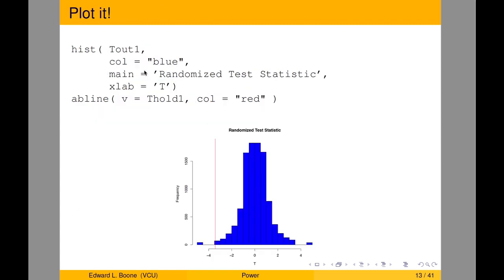When I run this, I plot t_out1 as a histogram with color blue, title 'Randomized Test Statistic', and x-label 't'. I add a vertical abline at t_hold1 — my original observed value — in red. Your picture won't look exactly like mine because I didn't set a seed intentionally, so you'll get different p-values than me, and you shouldn't be worried about that.